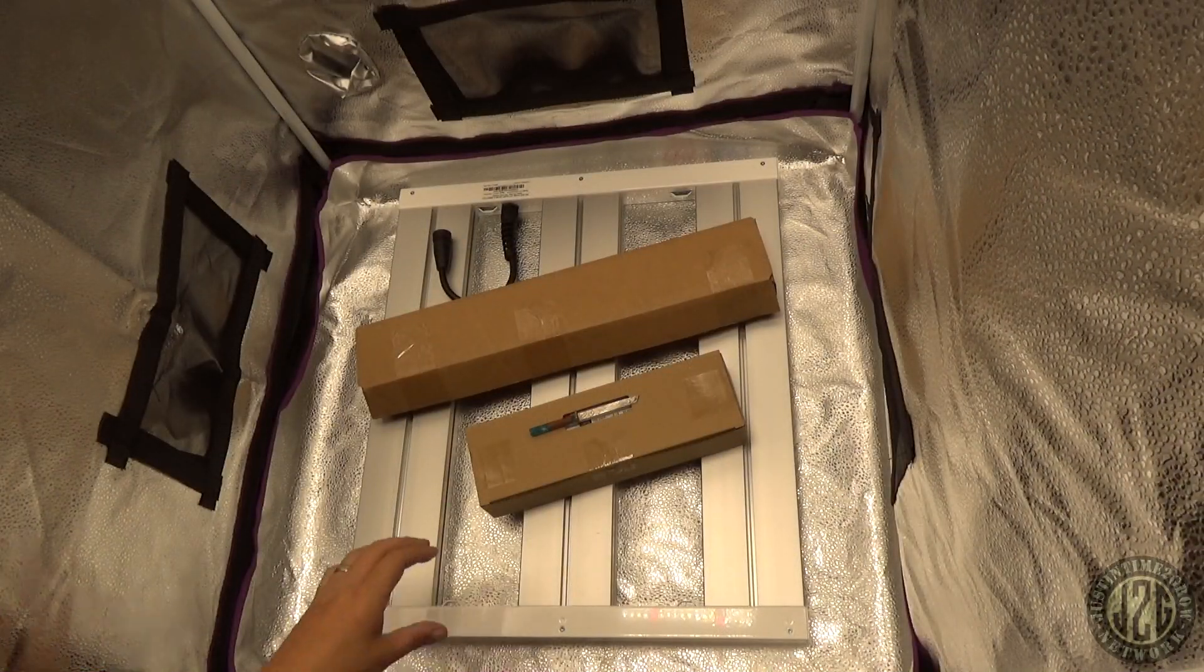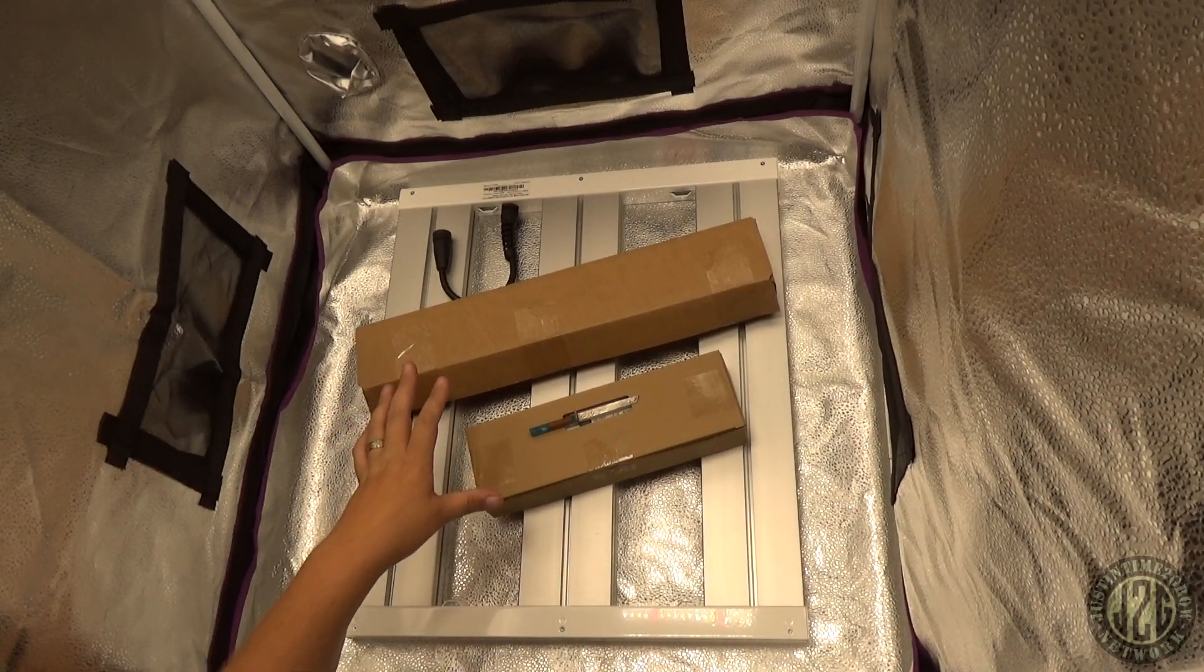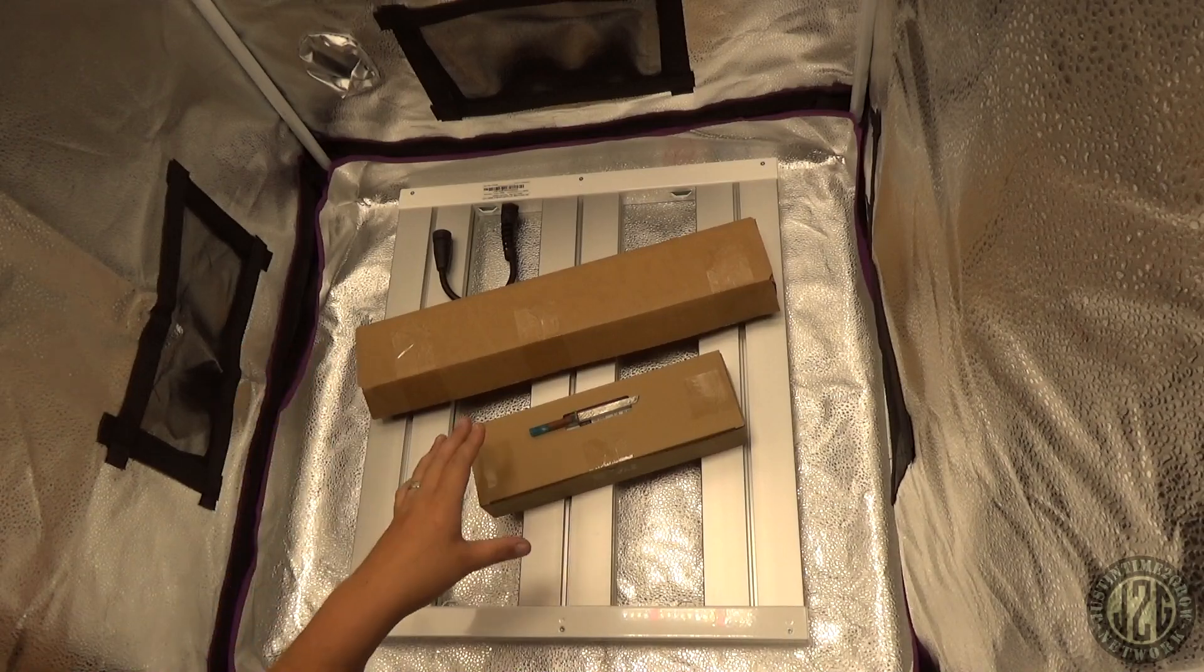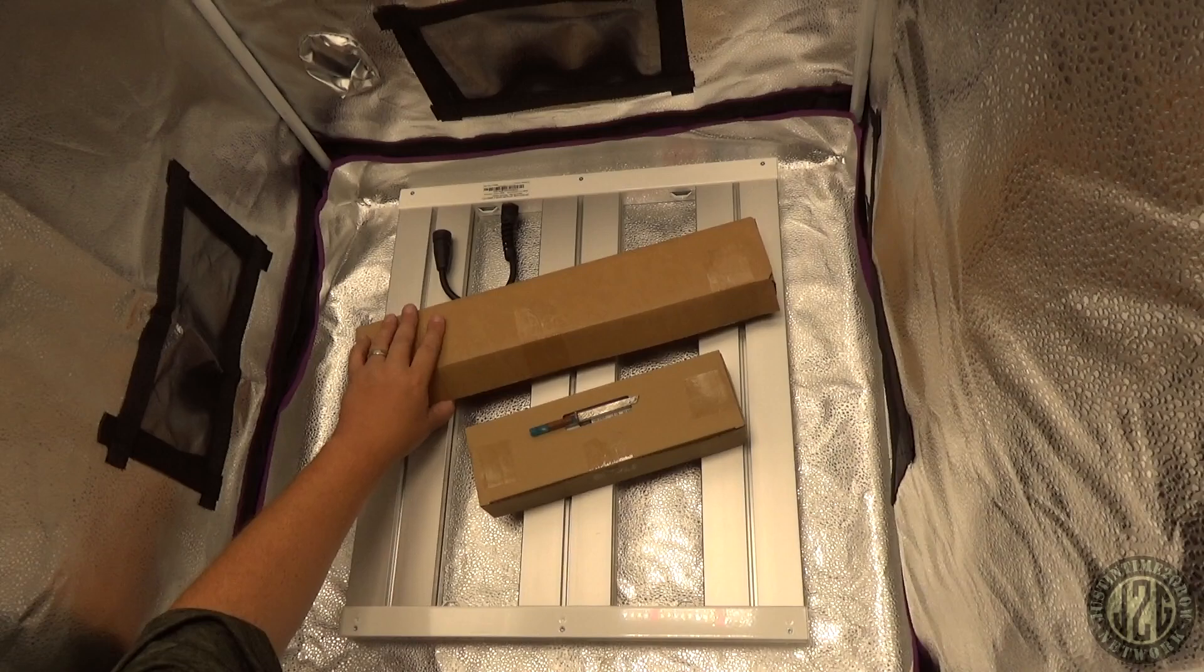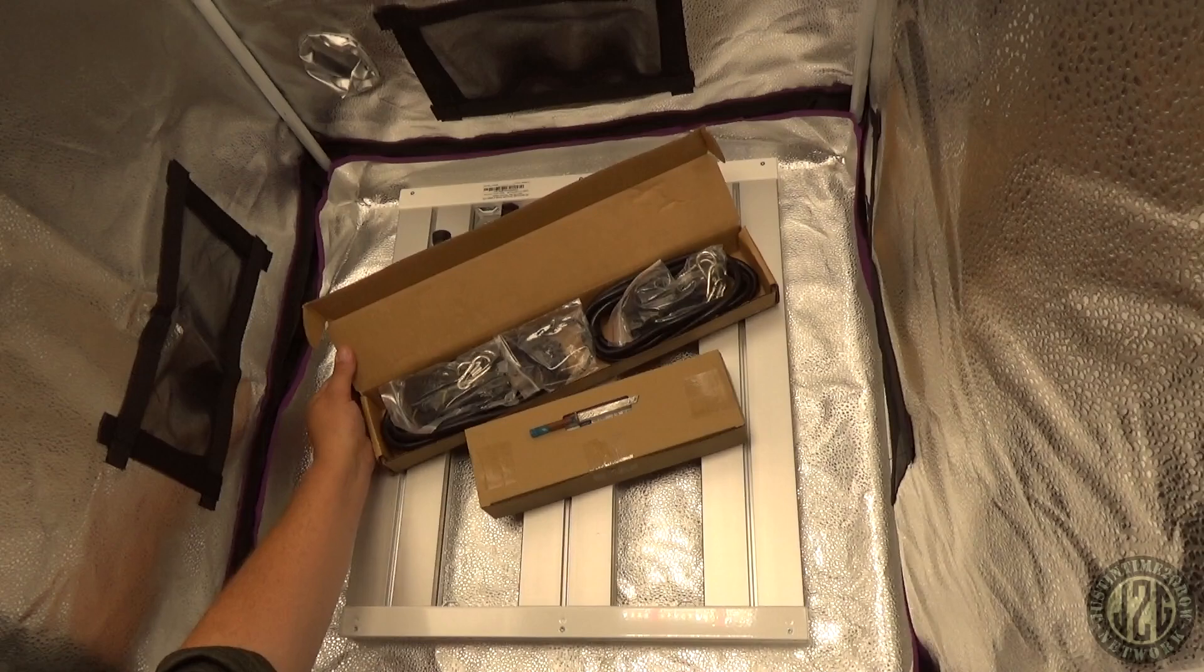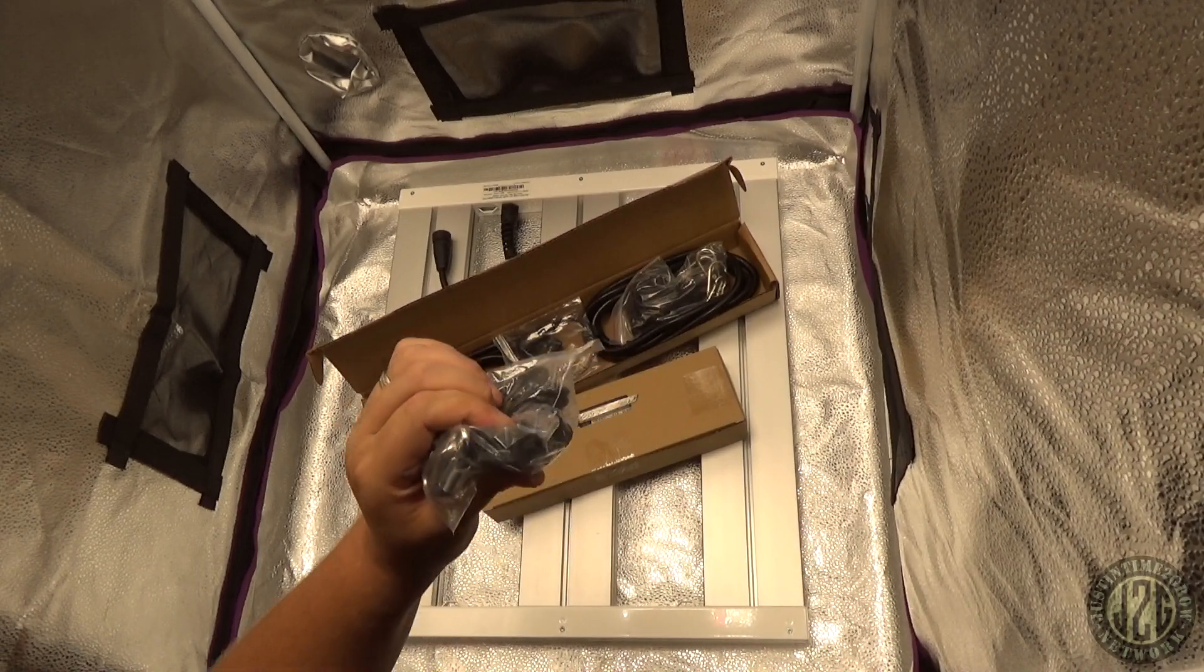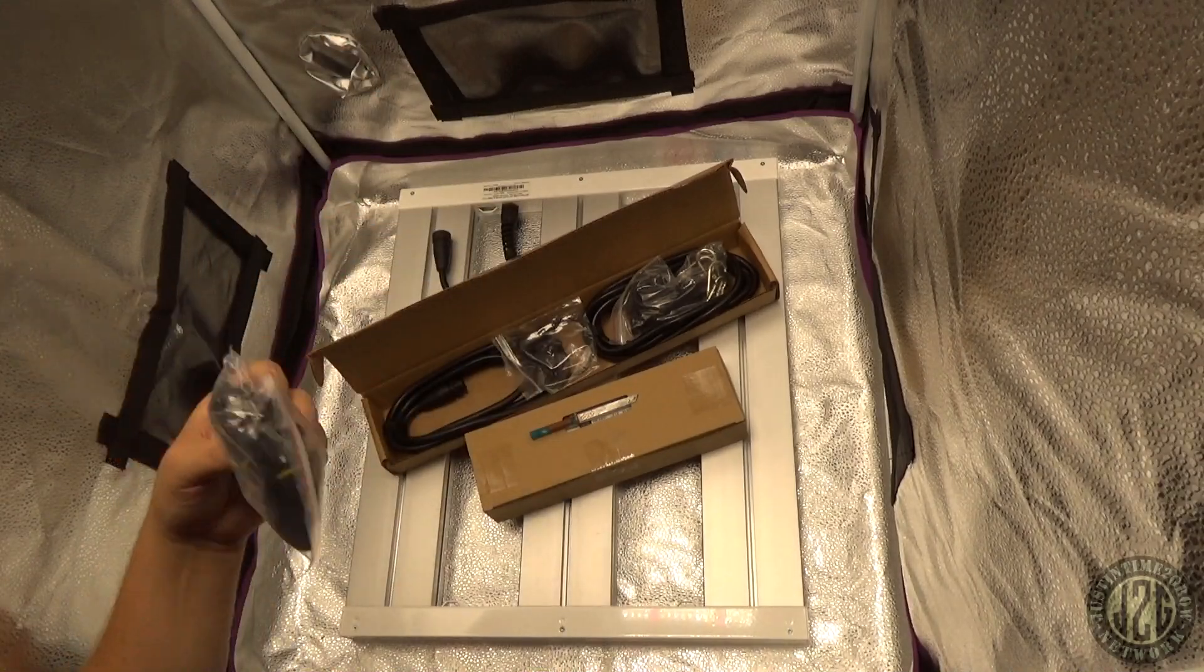Alright, this thing comes with a couple of accessory boxes, packed really well too, lots of styrofoam all the way around the light. Thing came out amazing, also wrapped in plastic, no scratches, no nothing, really great job on the shipping. Take a look at the accessory box here, see what we got. Of course you gotta have rope ratchets, metal gear rope ratchets as to be expected from a top shelf company.